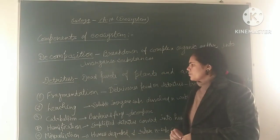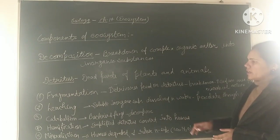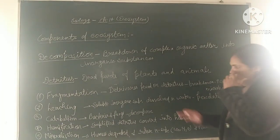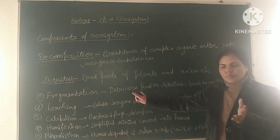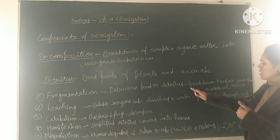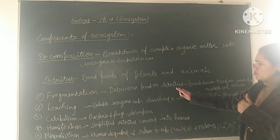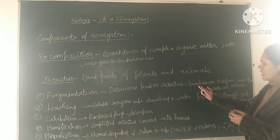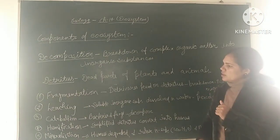Fragmentation: detritivores feed on detritus. The detritivores are animals who feed on detritus, like earthworms. By their feeding, the earthworms or other detritivores break down the detritus to increase the surface area for microbial action.